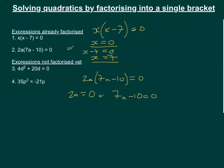2a equals 0 means that just a equals 0. Or we have that 7a equals positive 10, so a equals 10 over 7. So we have 2 results again, and those will be where the curve crosses the x-axis.